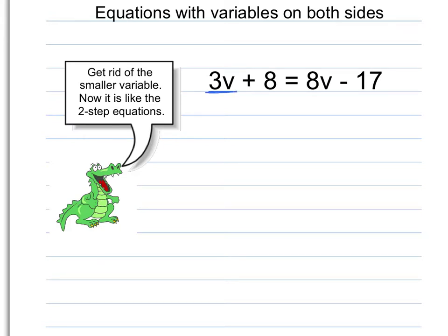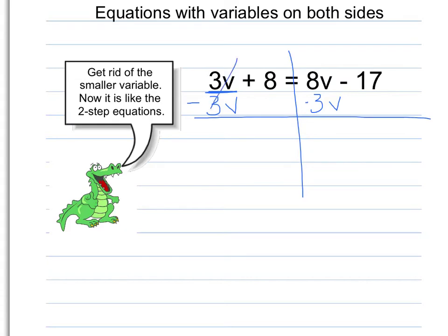So when she says get rid of it, what I'm really doing is trying to get 3V from the left side and make it join the 8V on the right side. So if I have a 3V, to get rid of it I do the opposite — I'd be subtracting 3V. I'm going to draw my line down to show that everything has to stay equal. Then I subtract 3V from the right side, so those cancel out. I'd have 8 left on the left side. 8V minus 3V is 5V, and then minus 17.